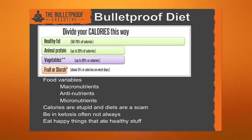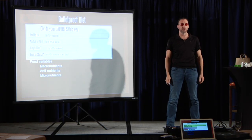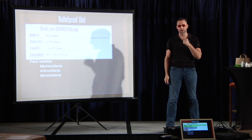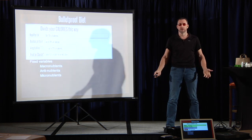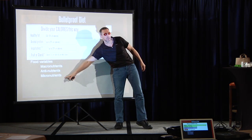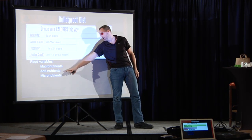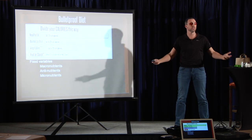Here's the variables. The first thing you look at is macronutrients. Does it have the right kinds of protein, fat, or starch? Then you go on to the next step. Does it contain anti-nutrients in it? Because what's the point of eating something that has a bunch of things that make me less healthy? That's the part that lots of nutritionists skip entirely in favor of micronutrients.